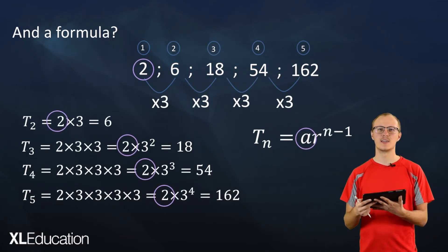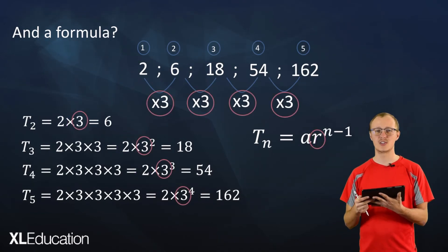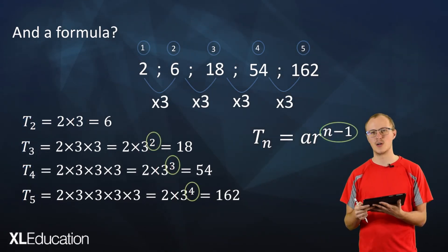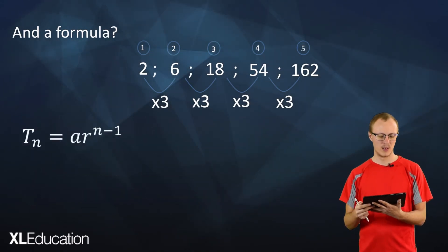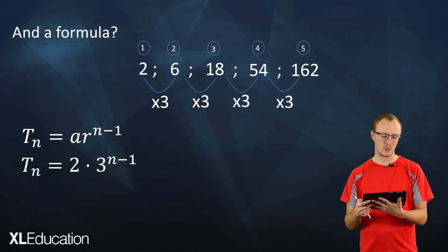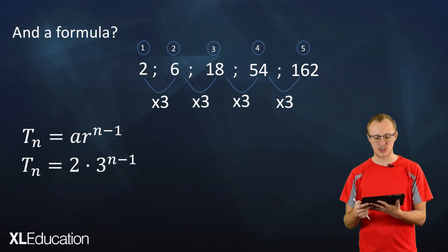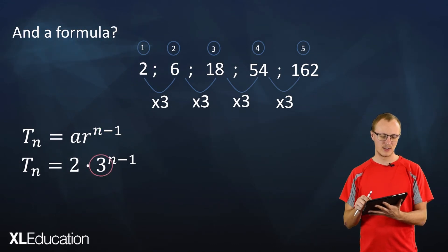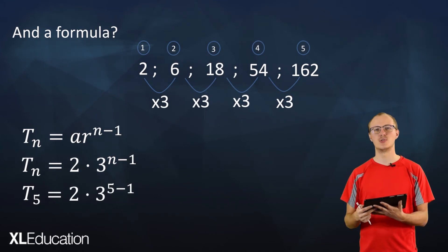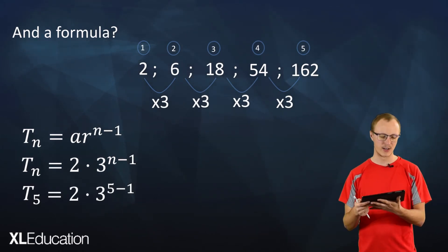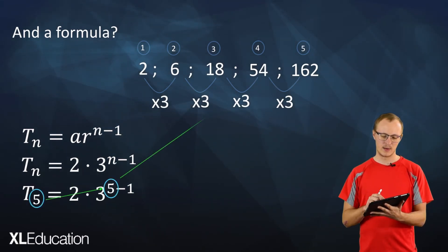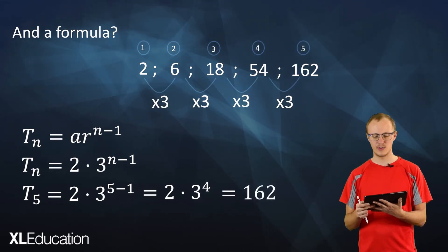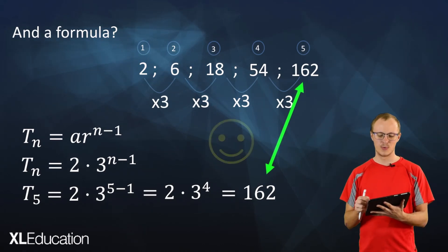The formula we derive from this is T_n equals a times r to the power of n minus 1, where a is the first term of the sequence, r is the constant ratio between each of the terms, n is the position of the term, and n minus 1 is the power to which we raise r. So the formula for this sequence would be 2 times 3 to the power of n minus 1. If we wanted to find term 5, we substitute 5 in for n: 2 times 3 to the power of 5 minus 1, which gives us 2 times 3 to the power of 4, equals 162. That's exactly what term 5 equals, which means our formula is correct.